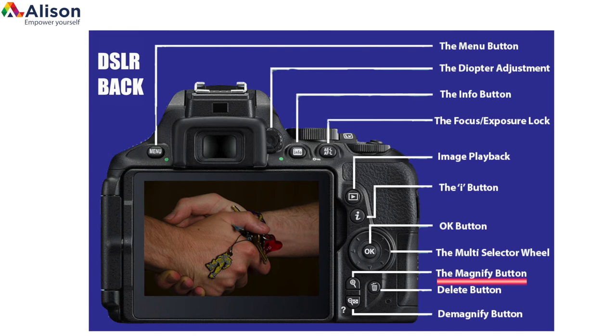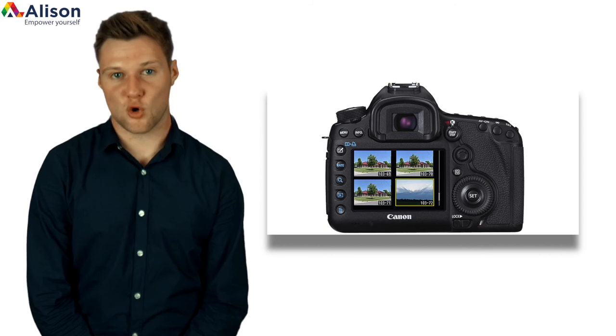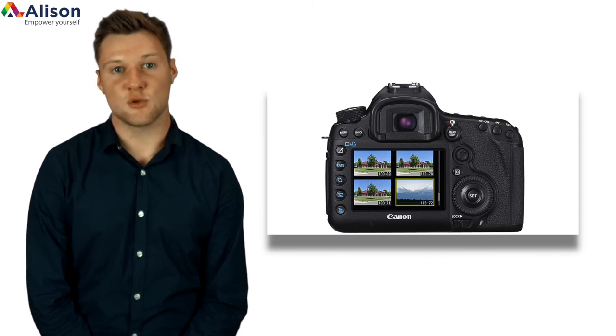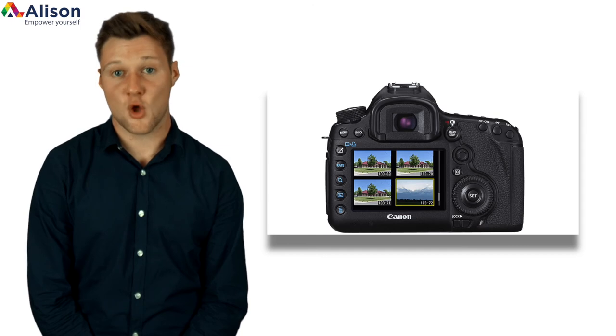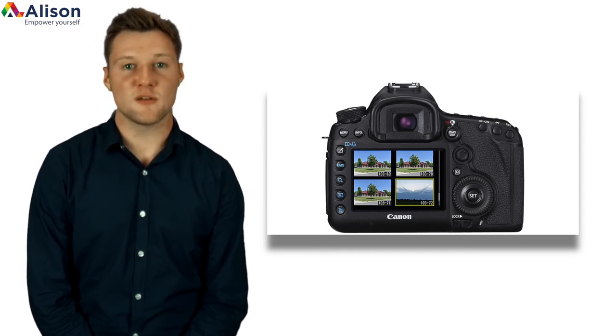Some manufacturers will have a separate dedicated control for this feature. The magnify button sometimes causes confusion — a lot of photographers will call it magnify rather than zoom, because this button is not concerned with zooming the camera lens. This button is actually used for magnifying or zooming in on an image during playback. This can ensure that you can see more detail and confirm that the camera was focused where you intended.